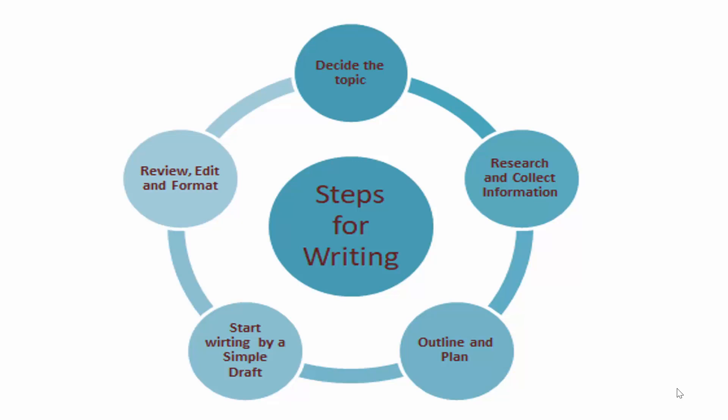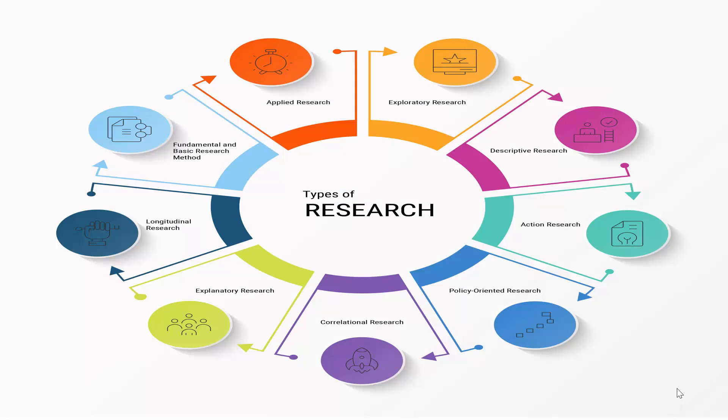What are the steps of writing? Firstly, we decide the topic and then research it and collect the information. Then we plan and outline it and start writing a simple draft. Then we review it, do editing and formatting.